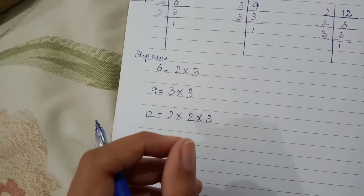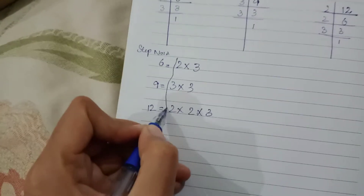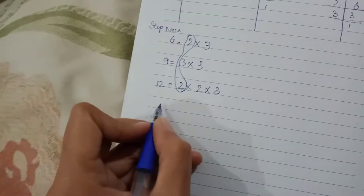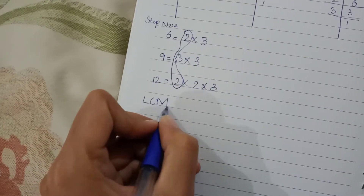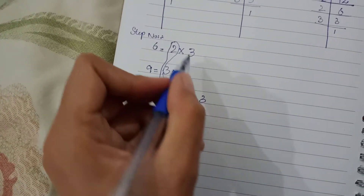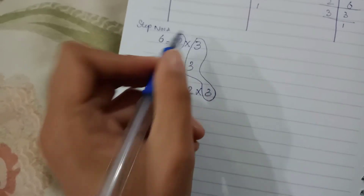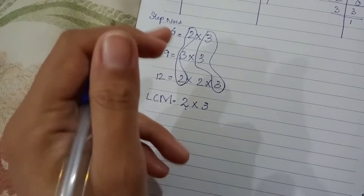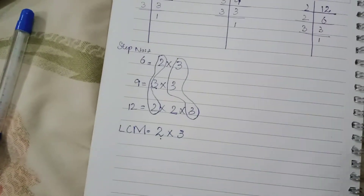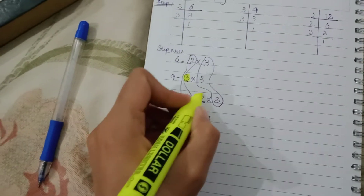Now, what do we do with the common factors? You can see that 2 is common and 2 is common in 12 — so 2 times 2 is common. In the LCM, we take the common factors first: 2 is common, and 3 is common — I have written 3. Now what else is uncommon? This 3 and this 2 are uncommon — we include those as well. So 3 is common and 2 is uncommon.